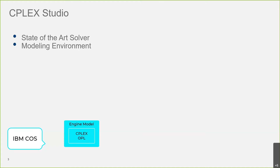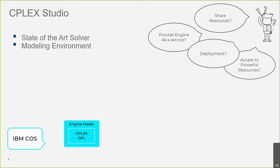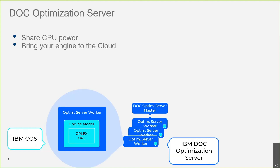The question that comes very quickly is: how do I access a powerful resource to run my optimization model? Can I provide this optimization model as a service for external users and applications? How can I deploy this application and this model? One solution is what we call DOC Optimization Server. The idea is to provide services that allow you to run your optimization model on the cloud, integrating your optimization engine inside what we call a worker running on dedicated cloud resources.